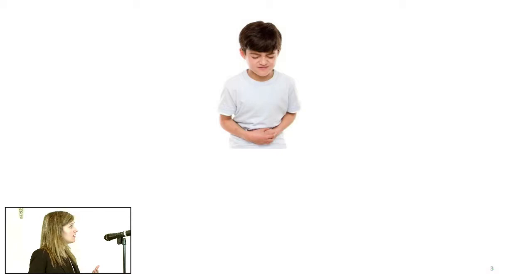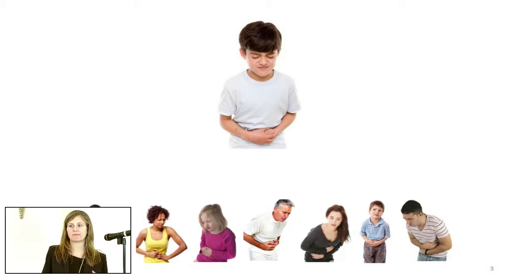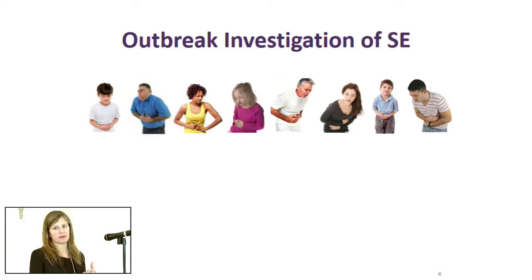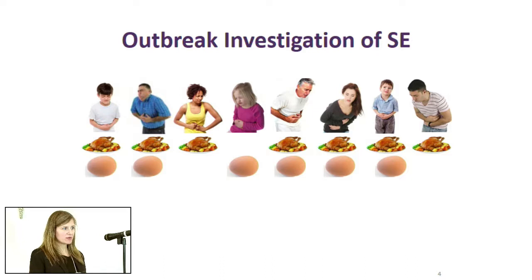Let's go through a case investigation. Little Jimmy has a stomachache and diarrhea; his mom takes him to the doctor, he submits a stool culture, and two days later it comes back positive for salmonella. That sample is forwarded to BC CDC for subtyping. Things become interesting when seven more cases appear linked in space and time — seven out of eight reported consuming chicken, and six out of eight reported consuming eggs, so there's no clear linkage to a cause.